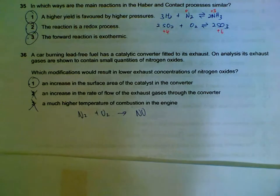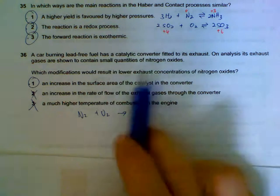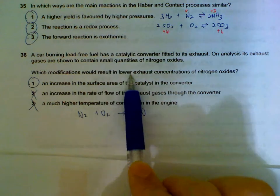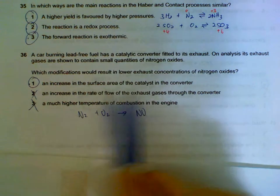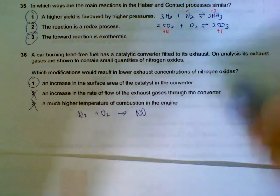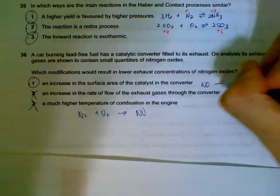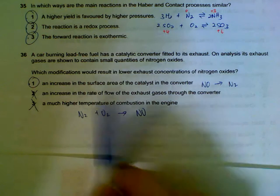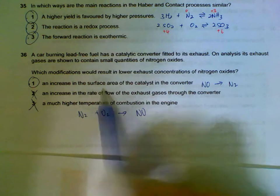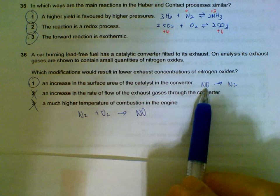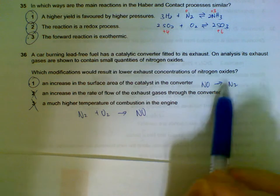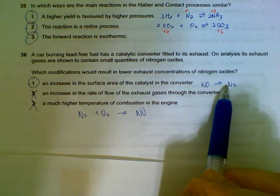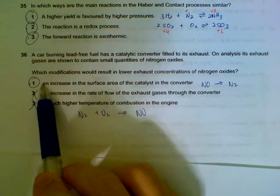What modifications will lower exhaust concentration of nitrogen oxides? The catalyst in the converter will convert your nitrogen oxides back to nitrogen gas. So if we have larger surface area, there will be more chances of nitrogen oxides converting back to nitrogen gas. So statement 1 is correct.